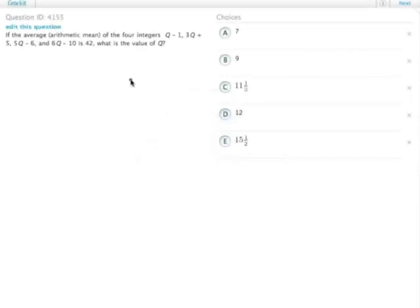So the average of the four integers all expressed in terms of q here is 42. What is the value of q? So we have to break out our average formula and add all of these things together.